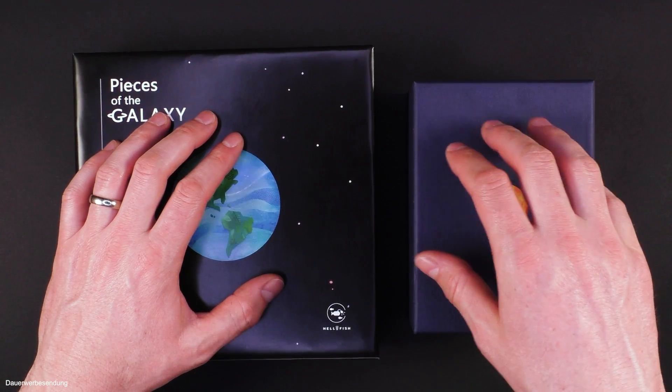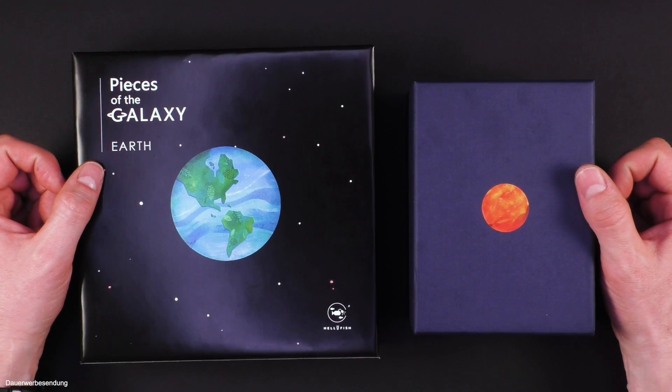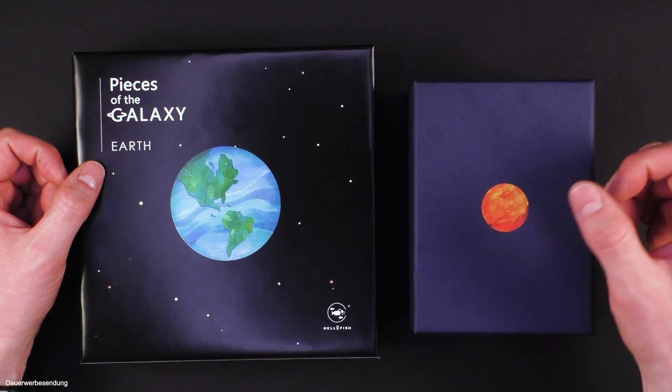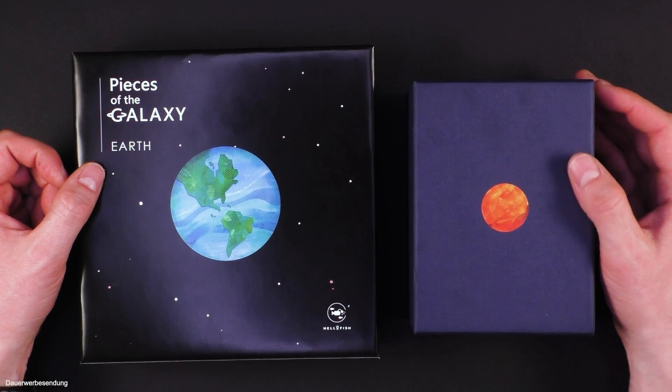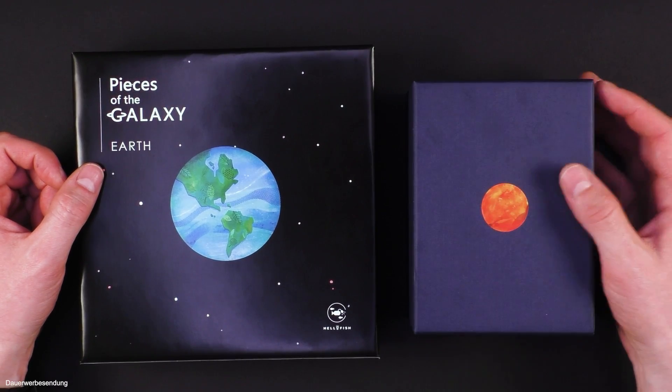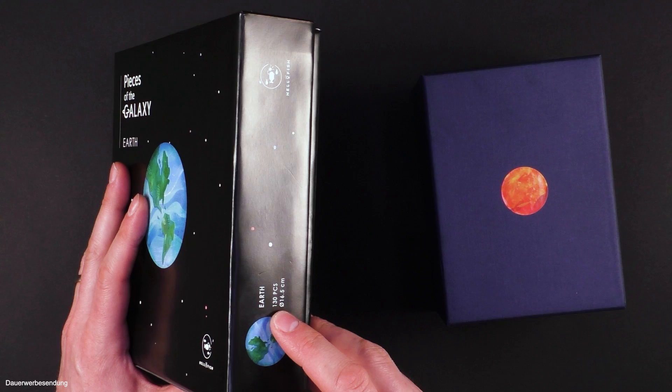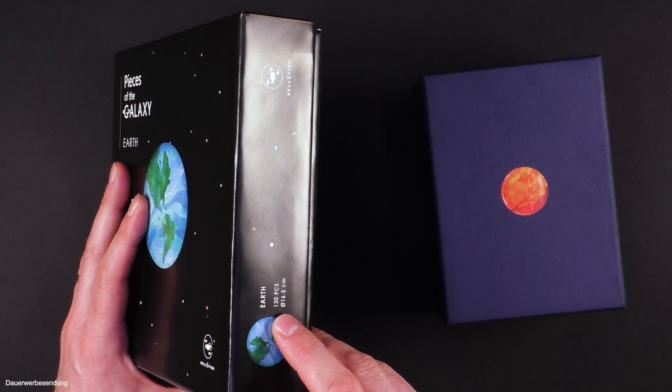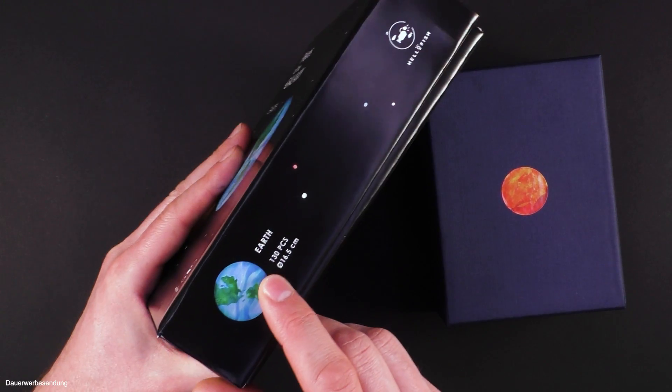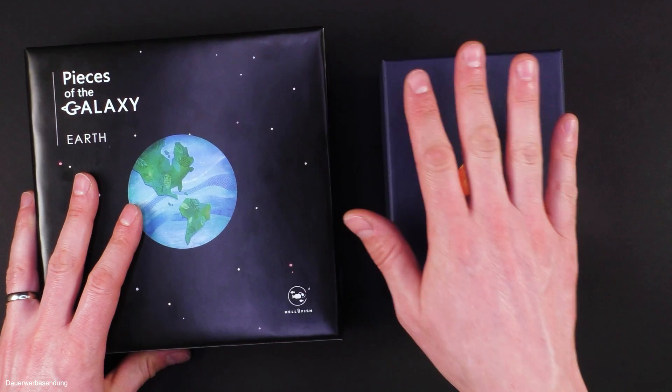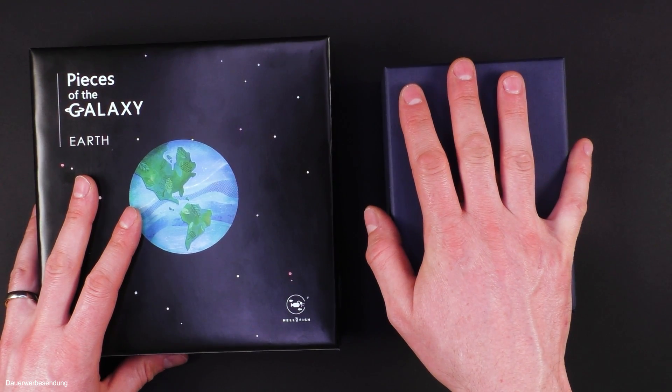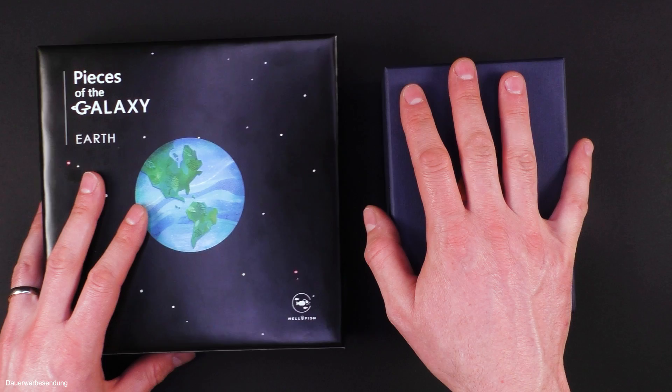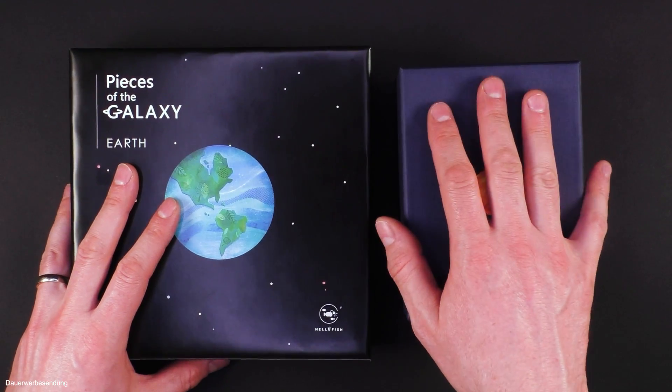Overall, this puzzle collection consists of 10 different puzzles and they are representing our eight planets in the solar system, our moon, and the only star in our solar system, the sun. This puzzle for example consists of 130 pieces and has a diameter of 16.5 centimeters, while this one has a diameter of 28 centimeters and has 365 pieces, which makes it by far the most difficult one.